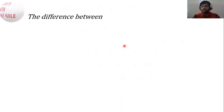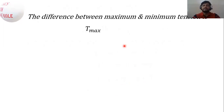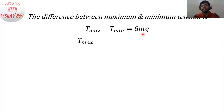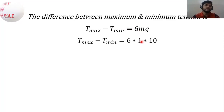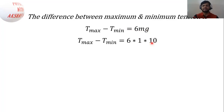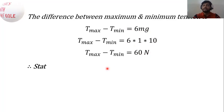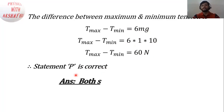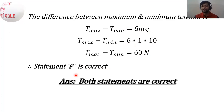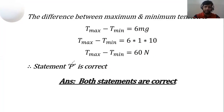The difference between the maximum and minimum tension along the string is 60 Newton. So Statement Q is also correct. Therefore, both statements P and Q are correct, and the answer is Option C.